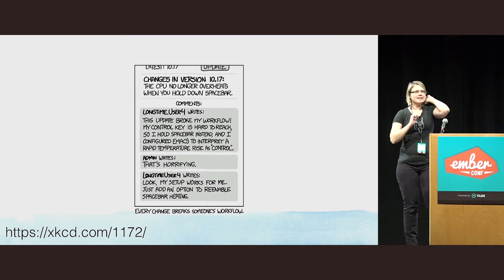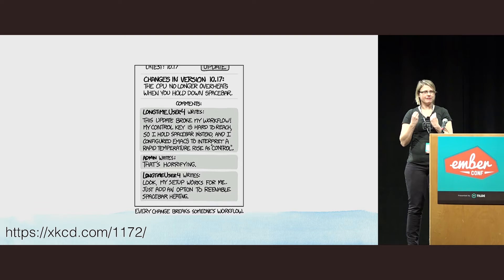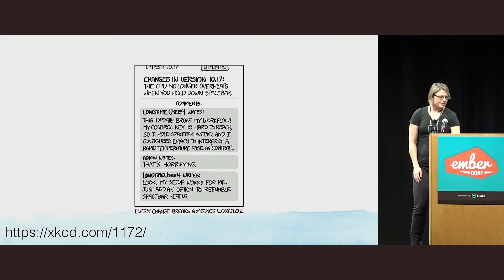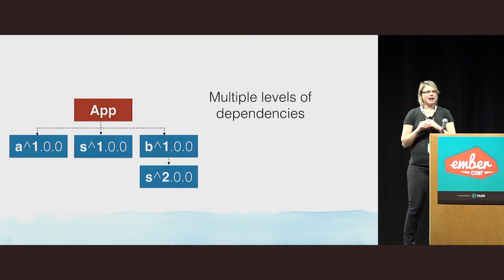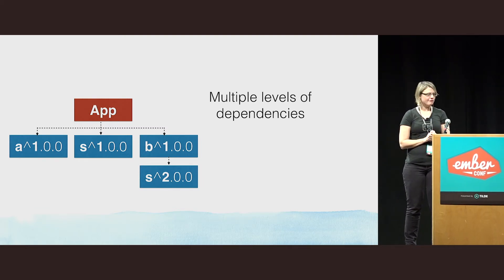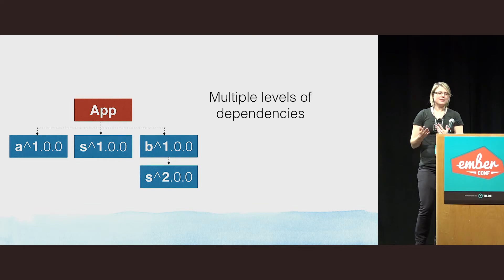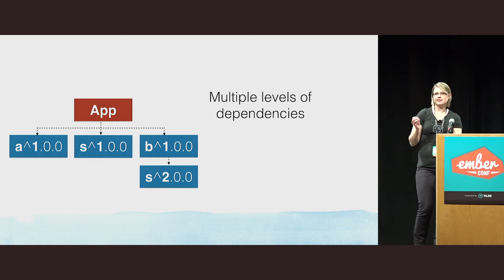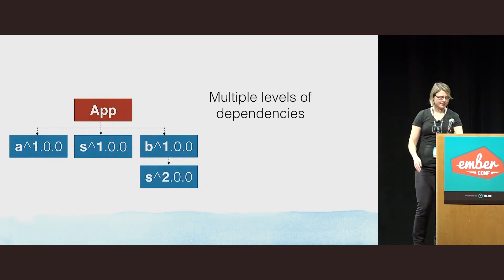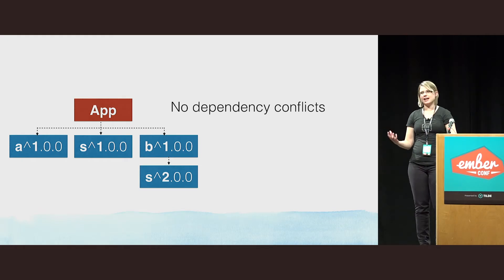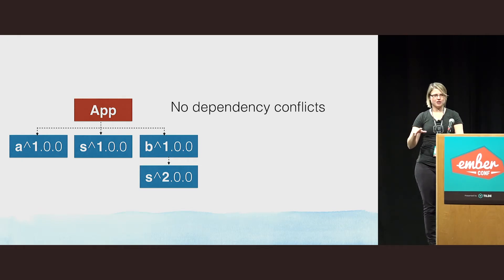Semantic versioning reflects the type of version change — it can be a patch or a major API-breaking change. One last thing: you can have two packages of the same name but different versions. NPM and Yarn allow this just because they use nested dependencies, which give each dependency its own namespace.